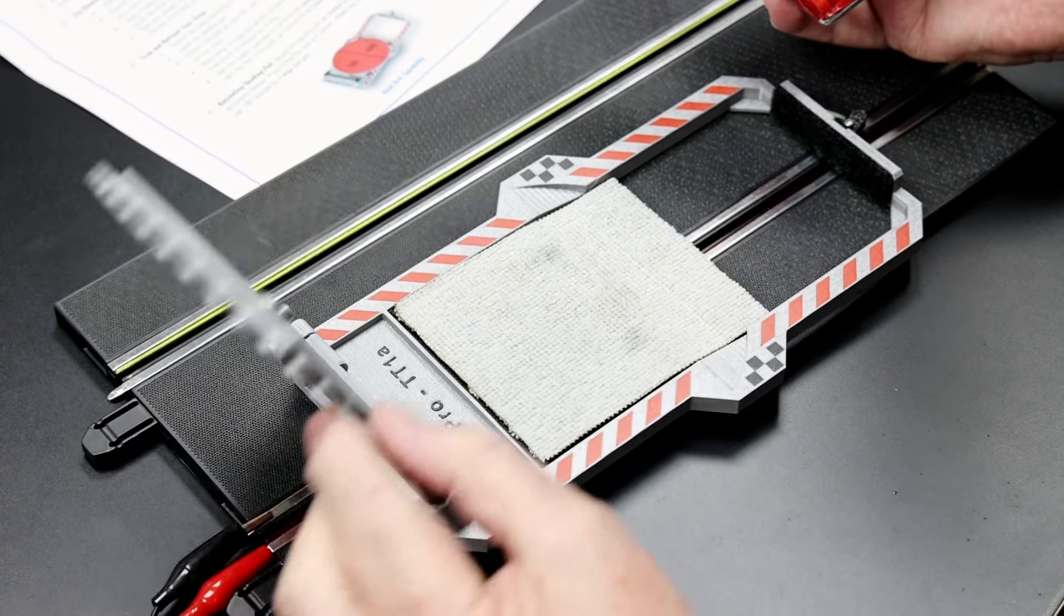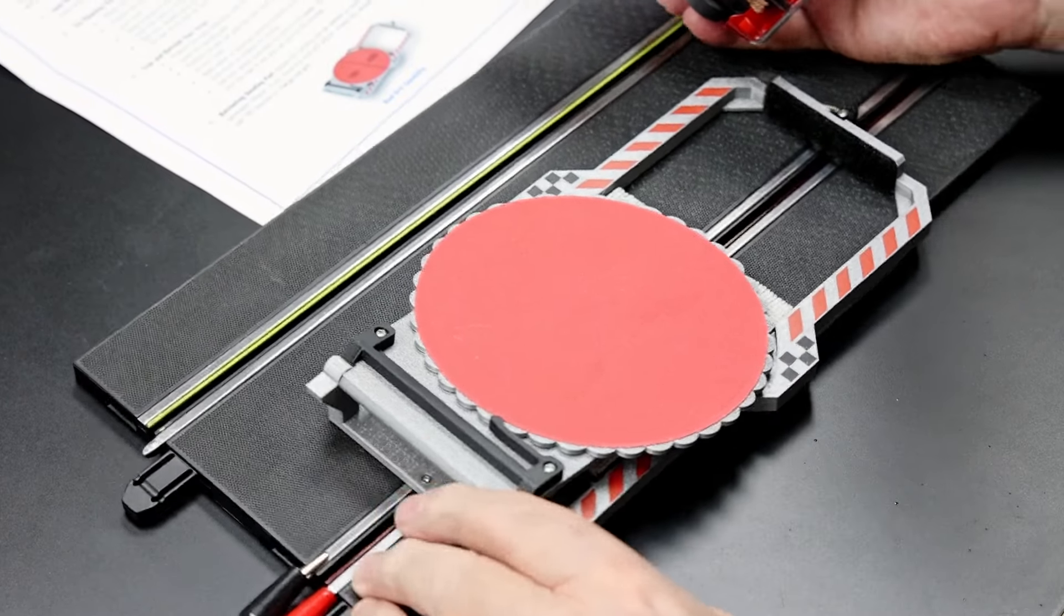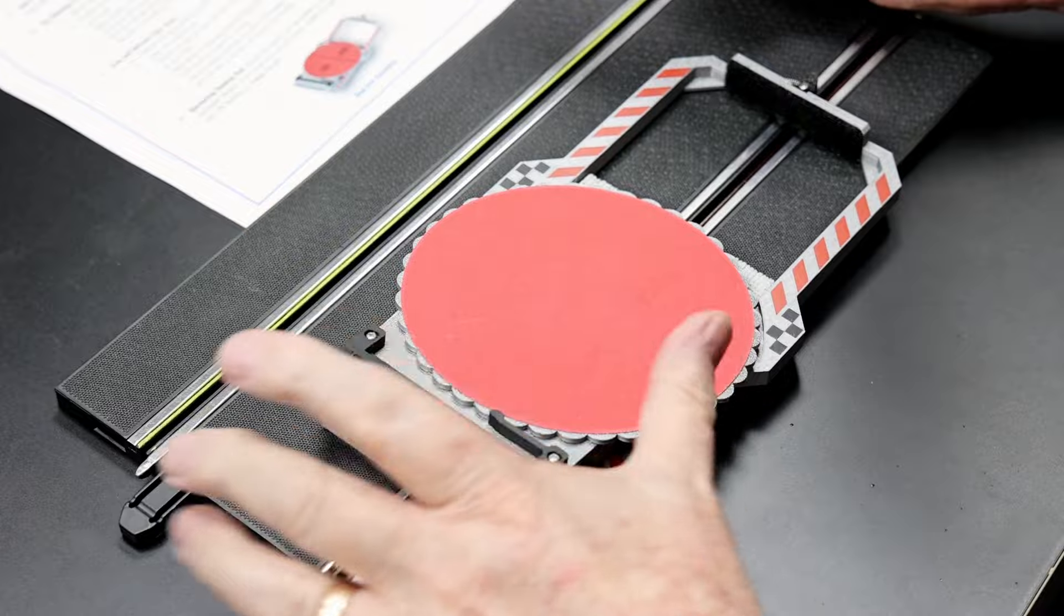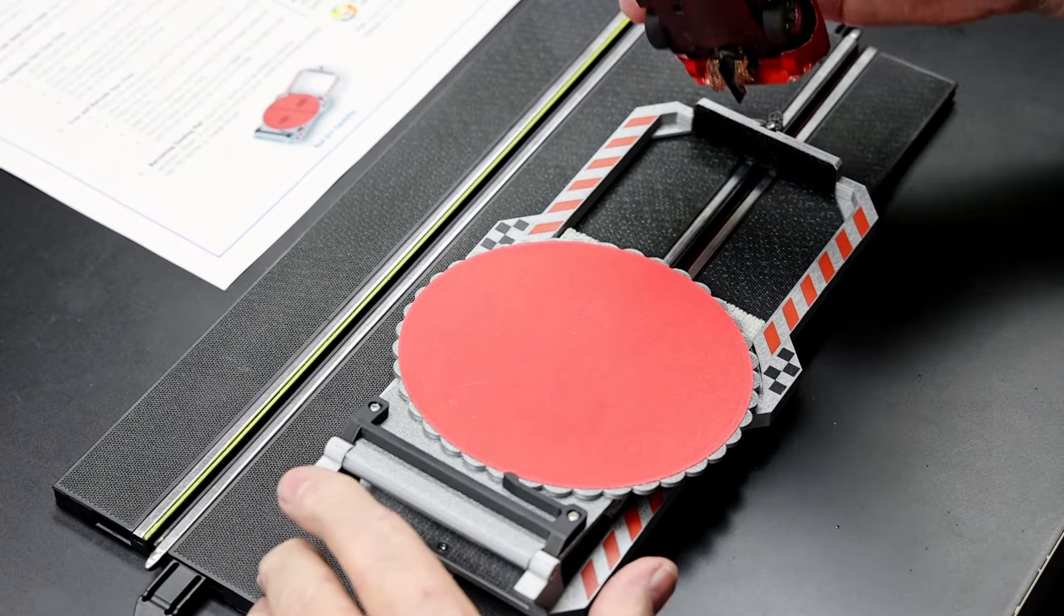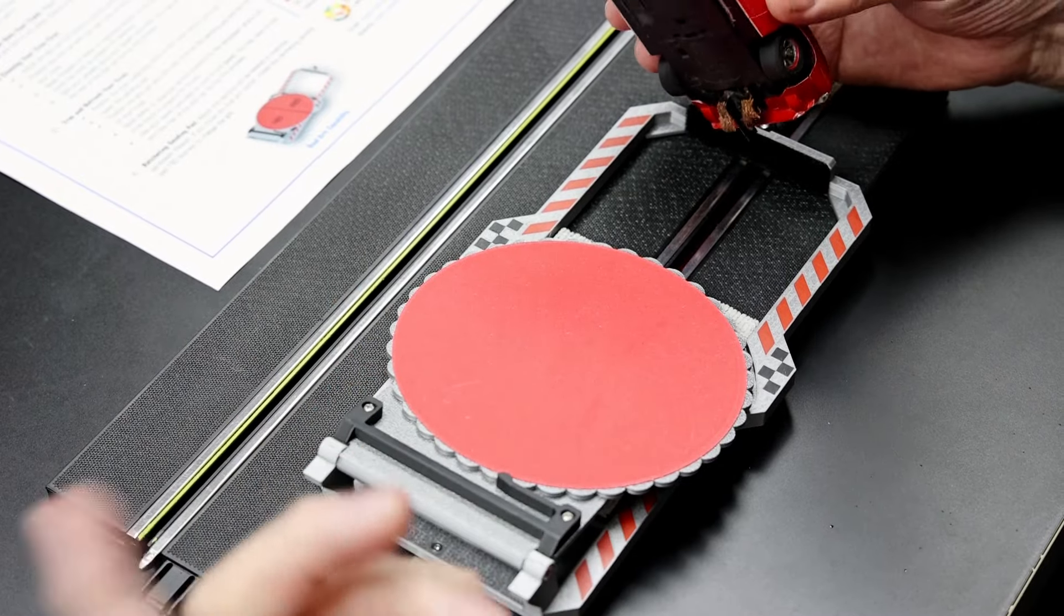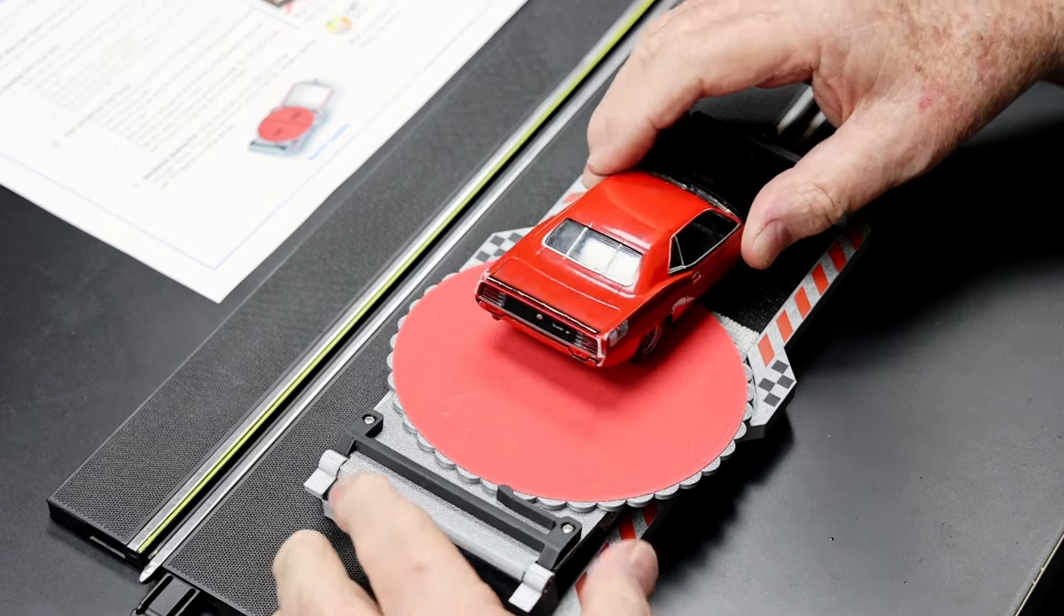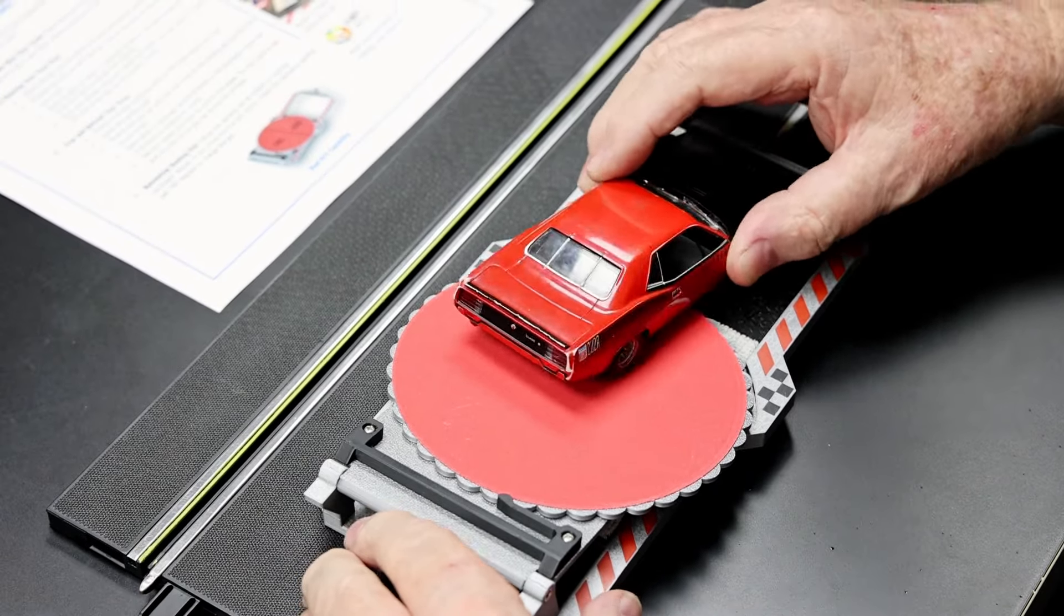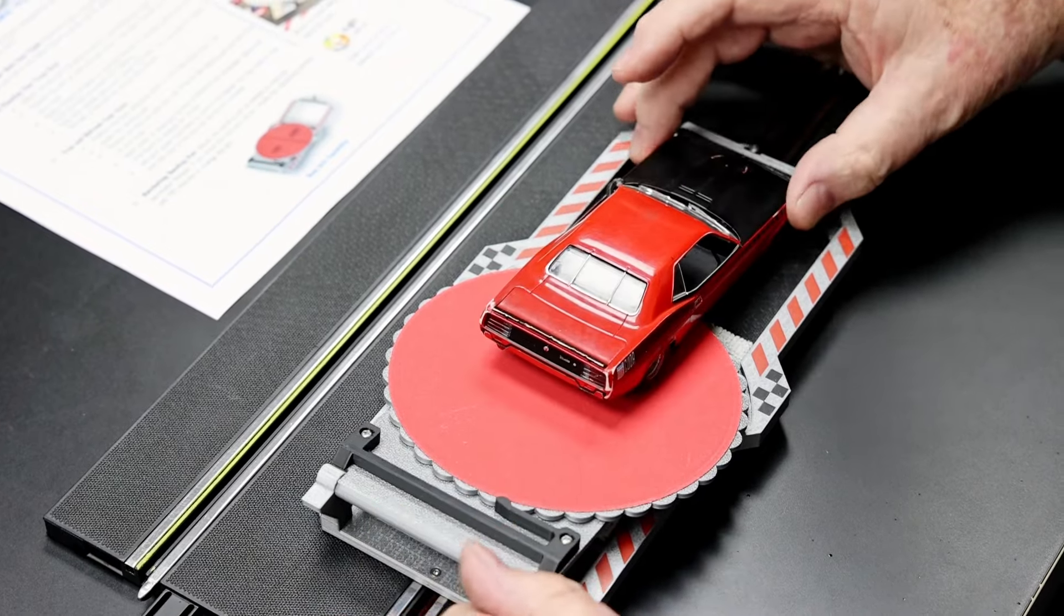If you need to true or scuff the tires, then you would fold down this hinged section of the truer, and again with your throttle in one hand and the car in the other hand, put it down and you can move the car back and forward across the sanding paper.